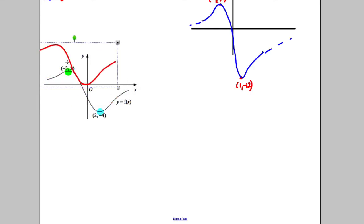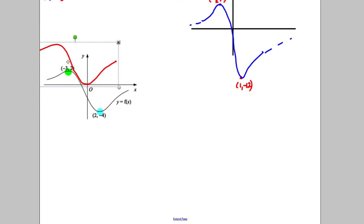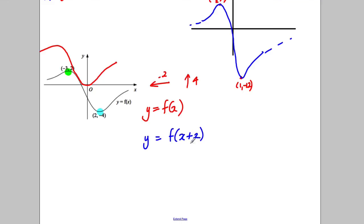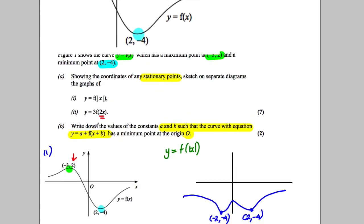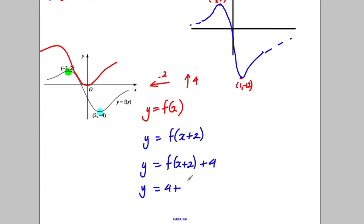You want the minimum point there at the origin. So what do you have to do? You have to shift it 2 units left and you have to shift it 4 units up. So you want a shift of 2 units left and a shift of 4 units up. The shifting of 2 units to the left gives y equals f of x plus 2, because the add 2 does the opposite to what you'd expect in the bracket, and shifting 4 units up is just add 4. So y equals f of x plus 2, plus 4. Going back to the equation, A is 4 and B is 2. So A equals 4 and B equals 2.